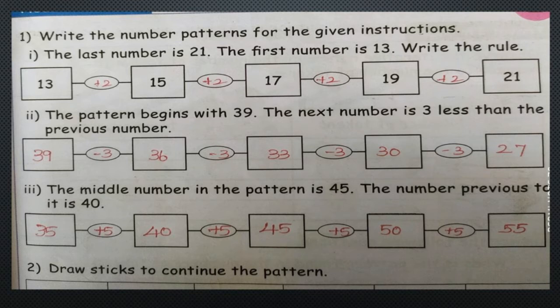Now we will see the second sum. The pattern begins with 39. The next number is 3 less than the previous number. So 39 minus 3 is 36, 36 minus 3 is 33, 33 minus 3 is 30, and 30 minus 3 is 27.